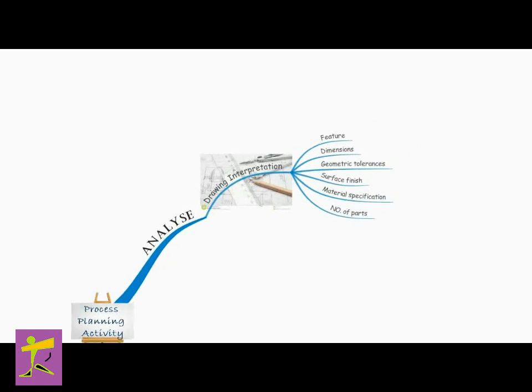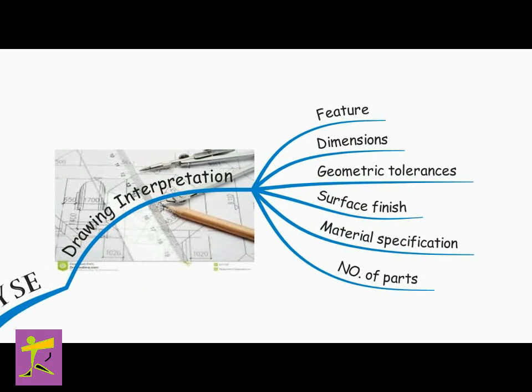The first step in process planning is to analyze the finished part requirements as specified in the engineering design. The engineering design may be shown either on an engineering drawing or in a CAD model format. The component drawings should be analyzed in detail to identify its features, dimensions, geometric tolerances, surface finish specifications, material specifications, and the number of parts required.